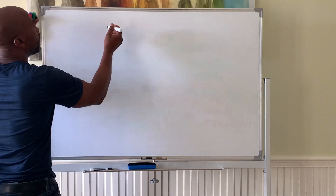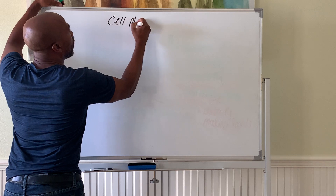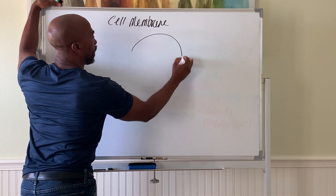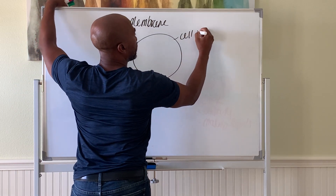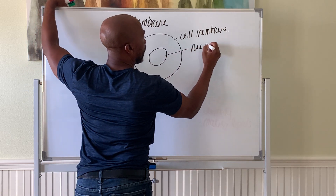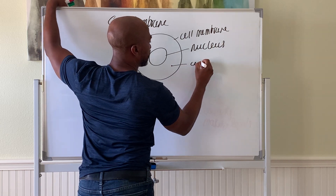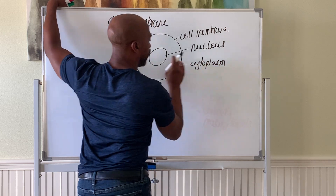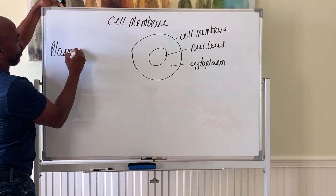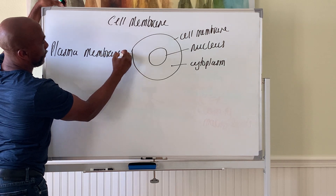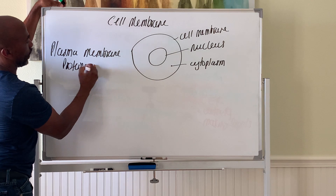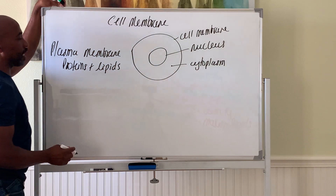Let's discuss the cell membrane. Your cell membrane — also called the plasma membrane — surrounds the cell, which also contains the cell nucleus and the cytoplasm with its various organelles. Now we're going to look at the membrane itself. The cell membrane is made up of two types of molecules: proteins and lipids.